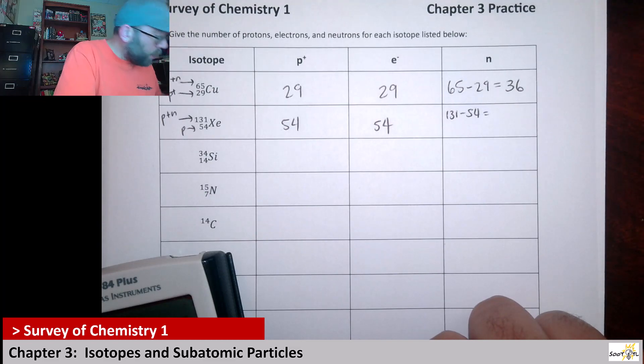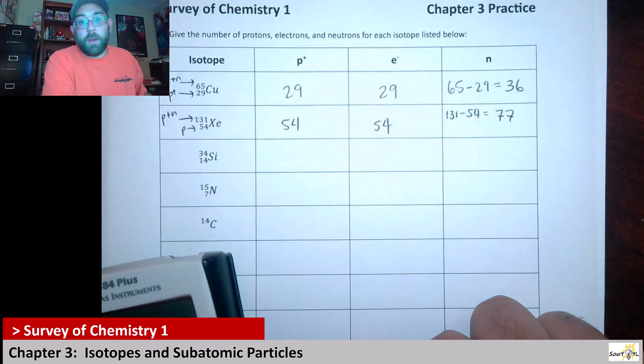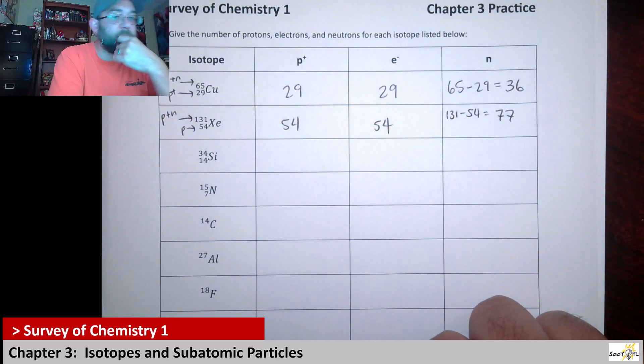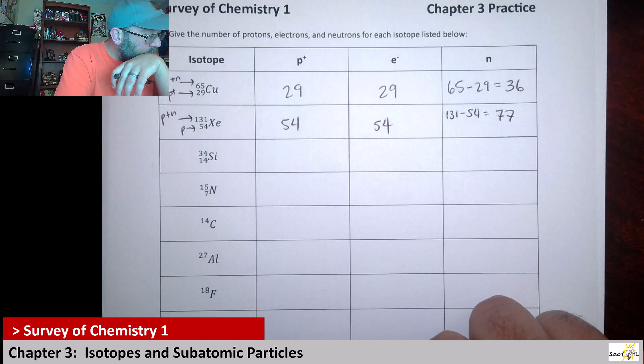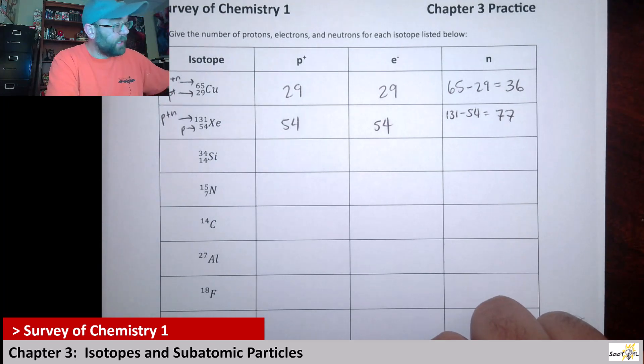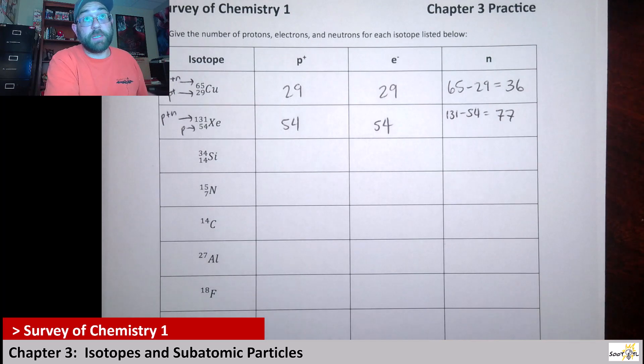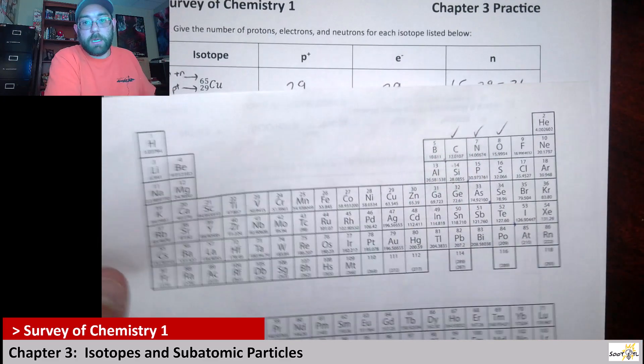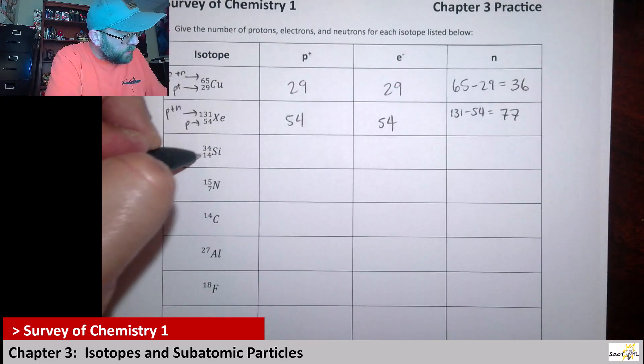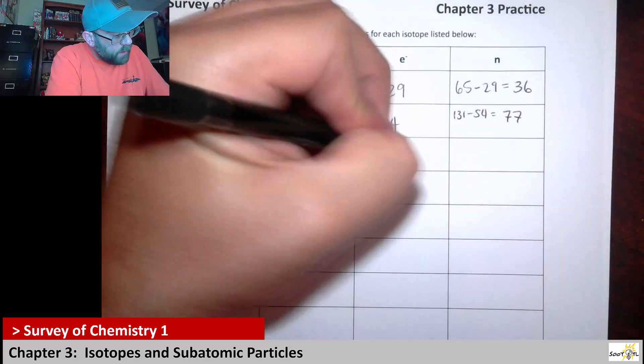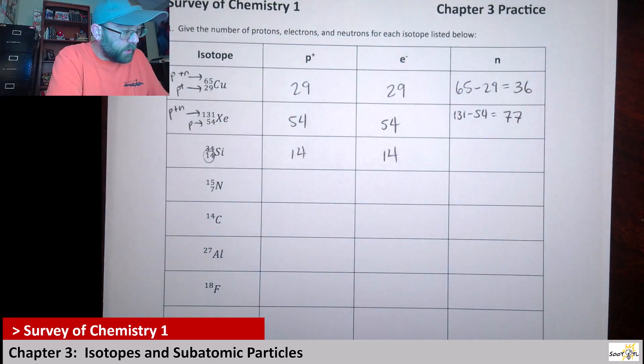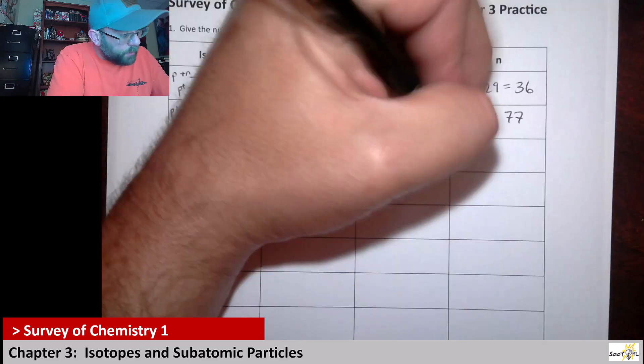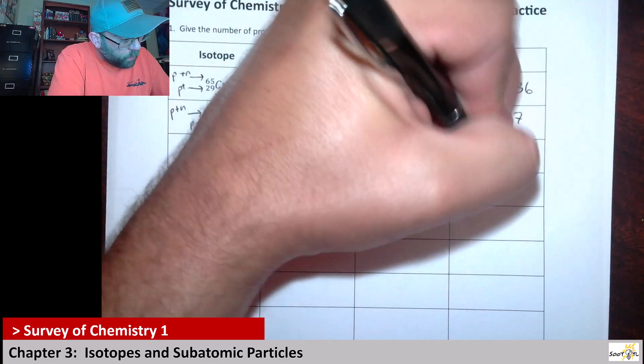Next up we have silicon. Silicon is one of those that we have to know, because we need to know the symbols and the identity based off of the first 18 elements. Silicon is right here in our p-block. With silicon, this number is yet again the number of protons, so this and this are the same because it's neutral - so protons and electrons are the same. Now to get our number of neutrons, we would say 34 minus 14. This one has 20 neutrons.